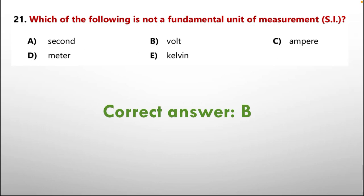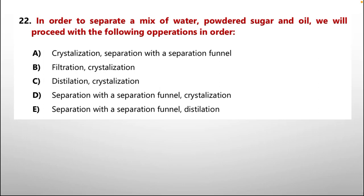Moving on, question number 22. In order to separate a mixture of water, powder, sugar and oil, we will proceed with the following operations in order. Options are given below: A, crystallization, separation with a separation funnel; B, filtration, crystallization; C, distillation, crystallization; D, separation with a separation funnel, crystallization; E, separation with a separation funnel, distillation.